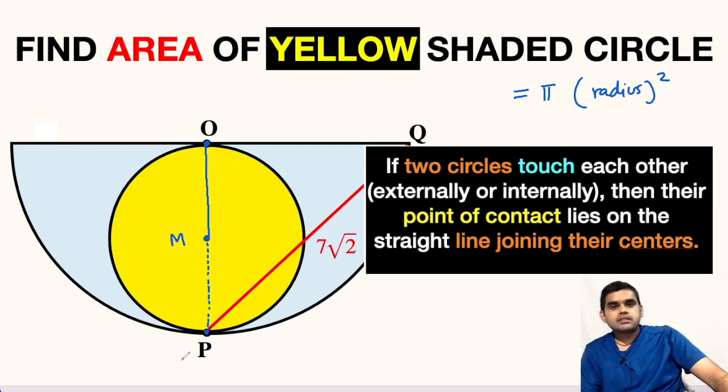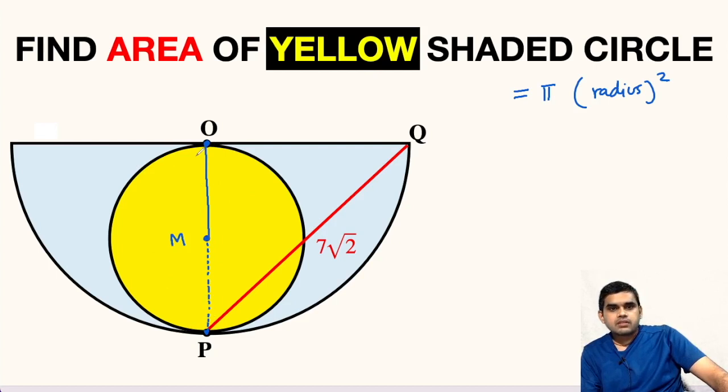This will be the diameter of this yellow circle. Let us assume that the radius of this yellow circle is small r. OM will be small r and likewise MP will also be small r.